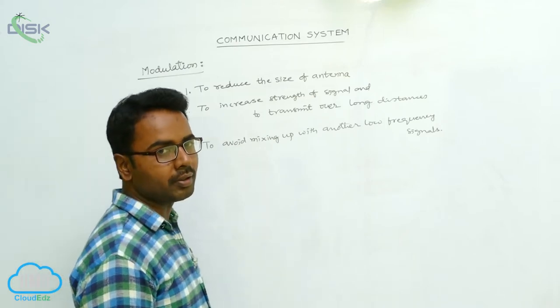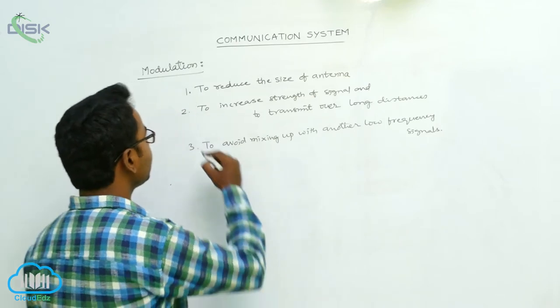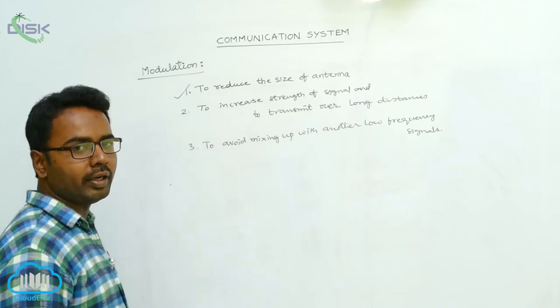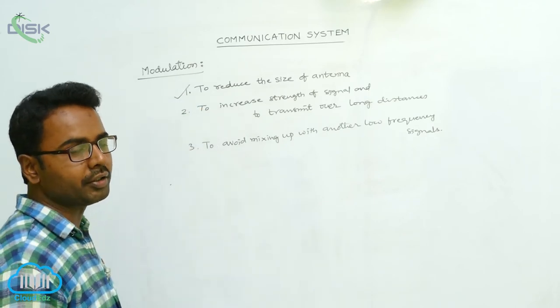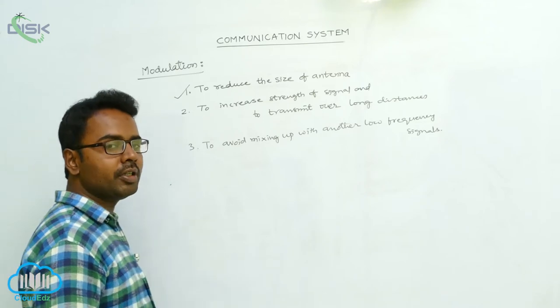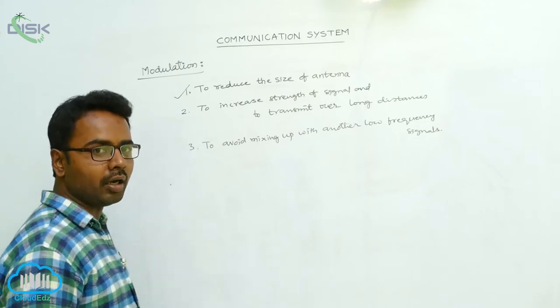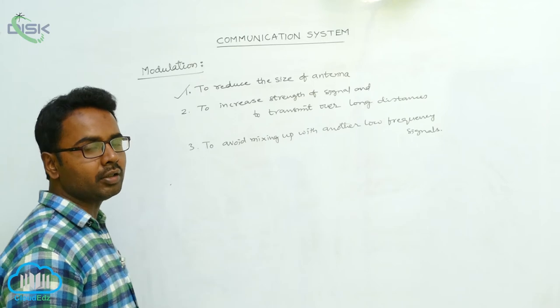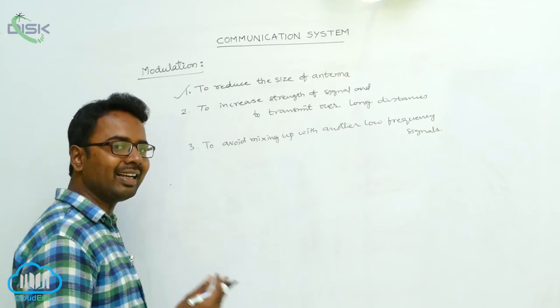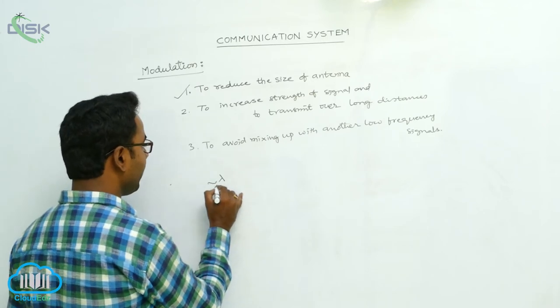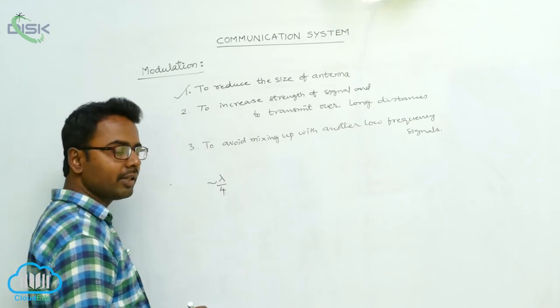Let us discuss individually. To reduce the size of antenna, we should do modulation. We know that to transmit signals of wavelength lambda, the size of the antenna should be of the order of lambda, or at least lambda by four.